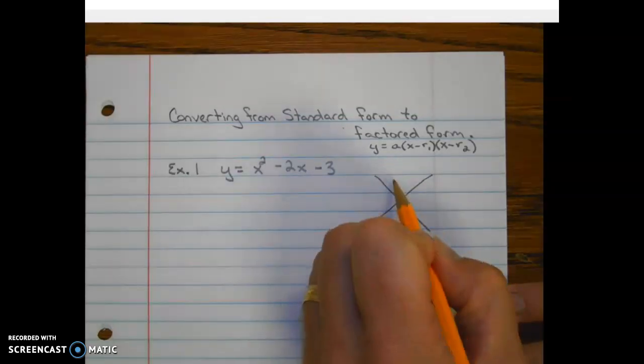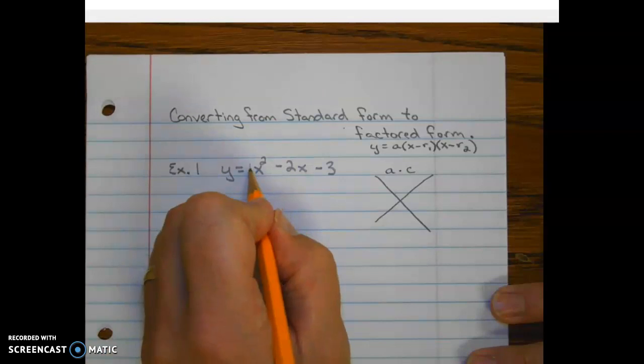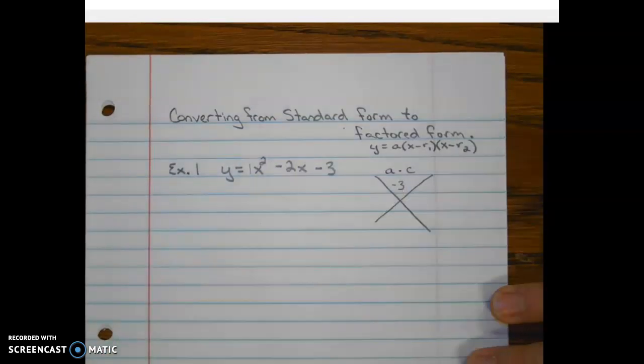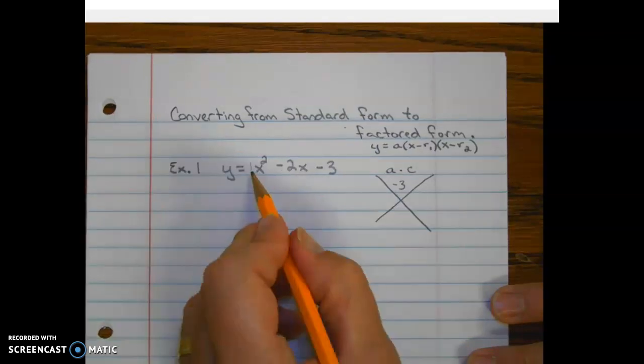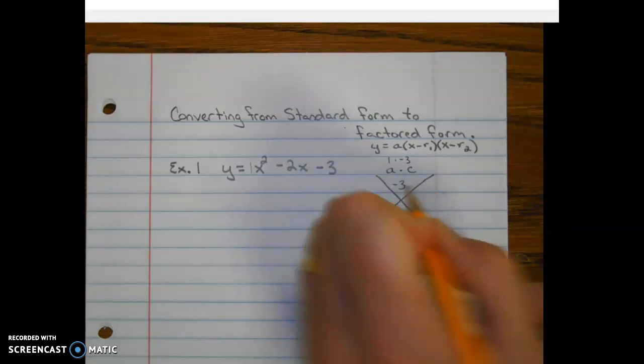So we're going to start at the top, and to get our top number we multiply A times C. So our A value is 1 and our C value is negative 3. So 1 times negative 3 is negative 3.